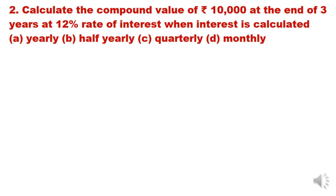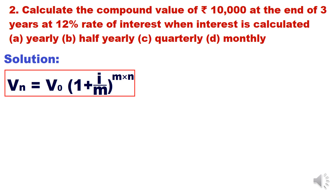Consider this problem: calculate the compound value of ₹10,000 at the end of three years at 12% rate of interest when interest is compounded annually, half-yearly, quarterly, and monthly — four situations. For annual compounding, m = 1, so the formula reduces to the same as before: V3 = 10,000 × (1 + 0.12)^3.